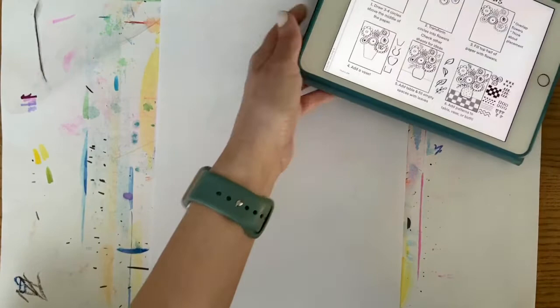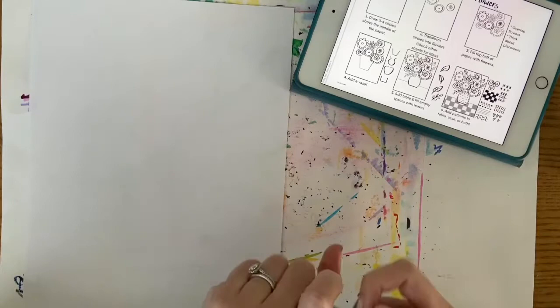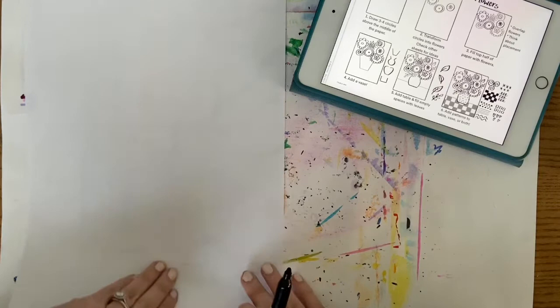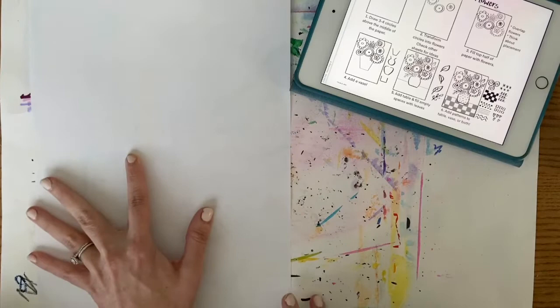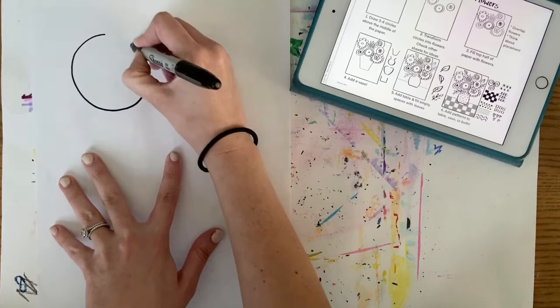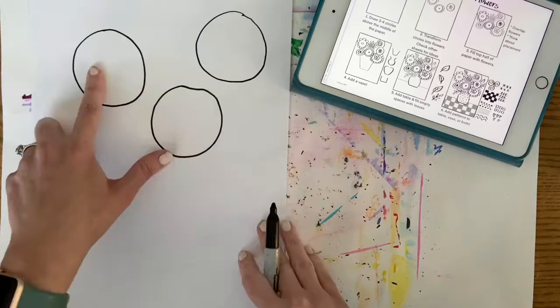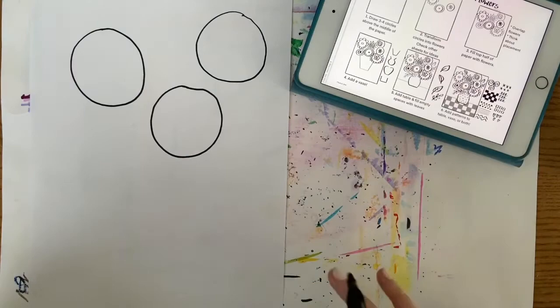So in order to do this, I'm going to start by drawing three or four circles above the middle of your paper. So I like to kind of find the middle. Mine's about right here. So I want my circles to be above that space.